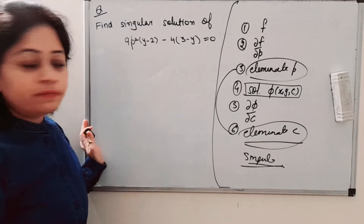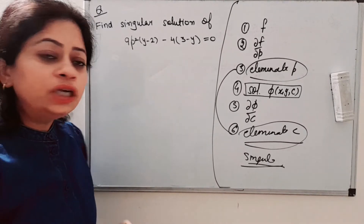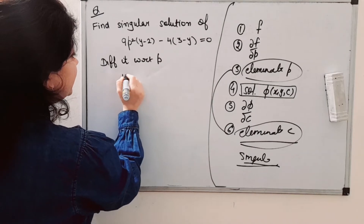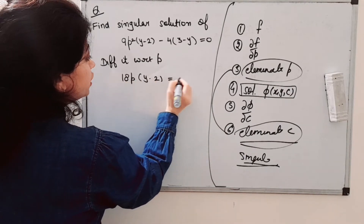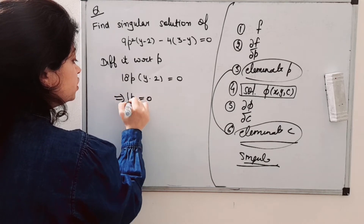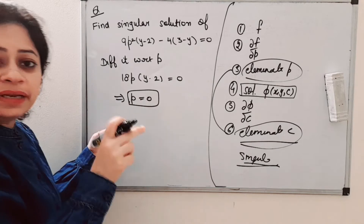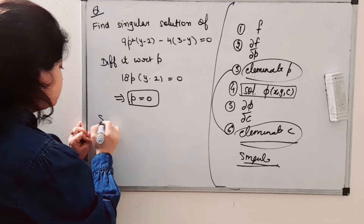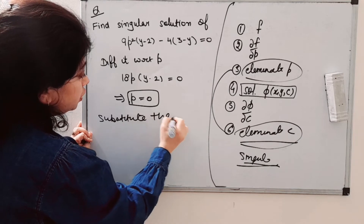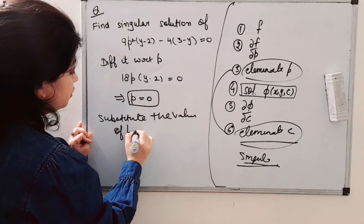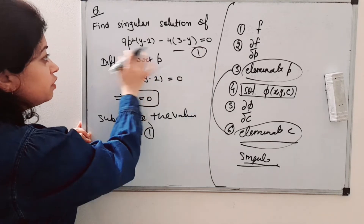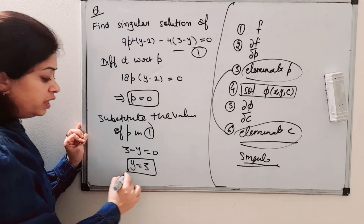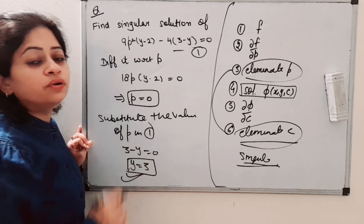So now we have this differential equation. What do we need to do? Differentiate it with respect to p. We get 2p·(y − 2) = 0, which implies p = 0. Now we need to eliminate p between the two equations — substitute the value of p = 0 into equation 1. We get 3 − y = 0, so y = 3. We get only one solution, which means this is the singular solution.